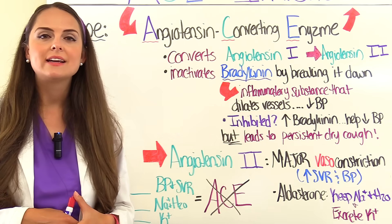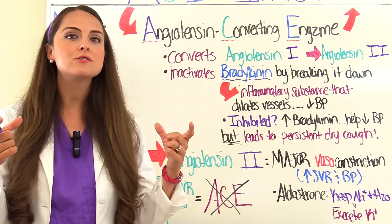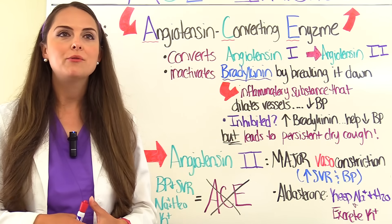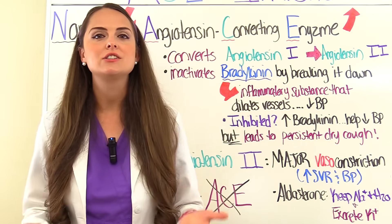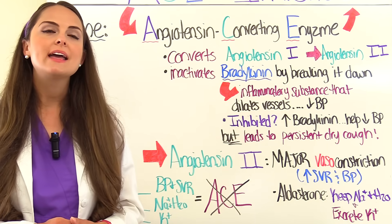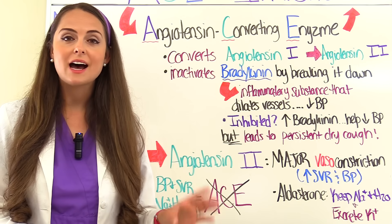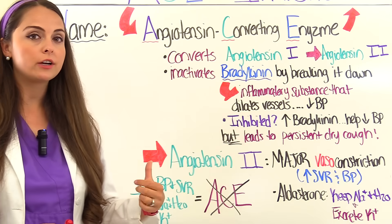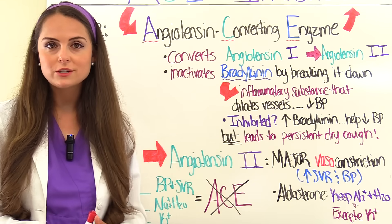Bradykinin is an inflammatory substance that helps dilate vessels. When we dilate vessels, we decrease systemic vascular resistance and hence blood pressure. When the RAS system kicks in, it doesn't need dilation, so it's important that ACE inactivates bradykinin. But with an ACE inhibitor on board, we benefit from bradykinin's vessel-dilating actions. ACE inhibitors inhibit this inactivation of bradykinin, so we get increased bradykinin, which dilates vessels and helps decrease blood pressure even more.